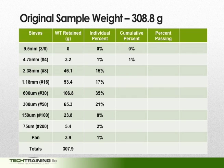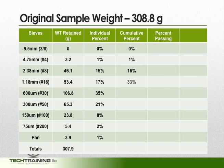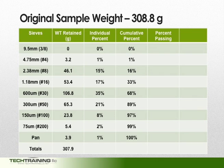The cumulative percent retained is achieved by taking the individual percent retained on any given sieve and adding to it the individual percent retained of all the previous sieves. Therefore, the cumulative percent retained on the 2.36mm sieve would be 16%, while the cumulative percent retained on the 1.18mm sieve would be 33%. The remaining values can be filled in accordingly.